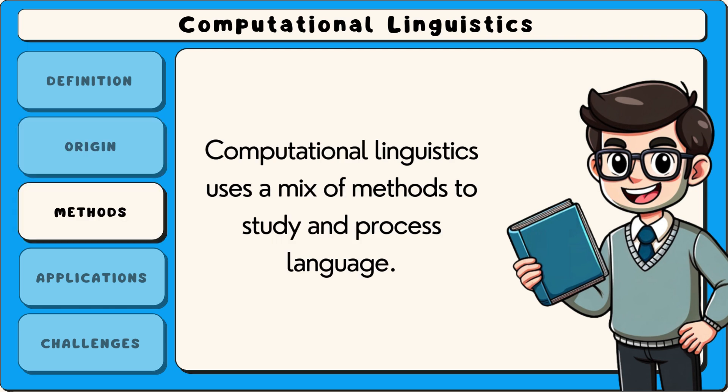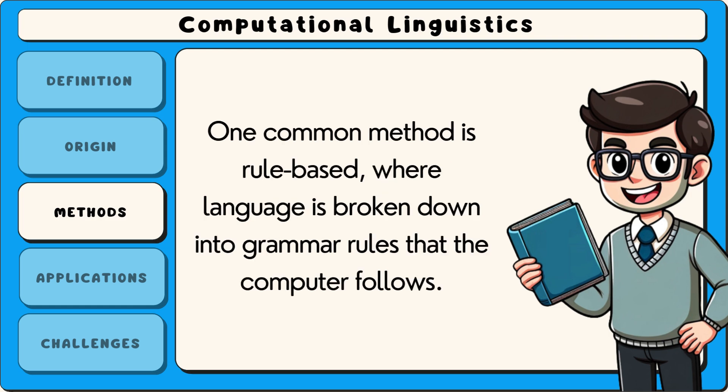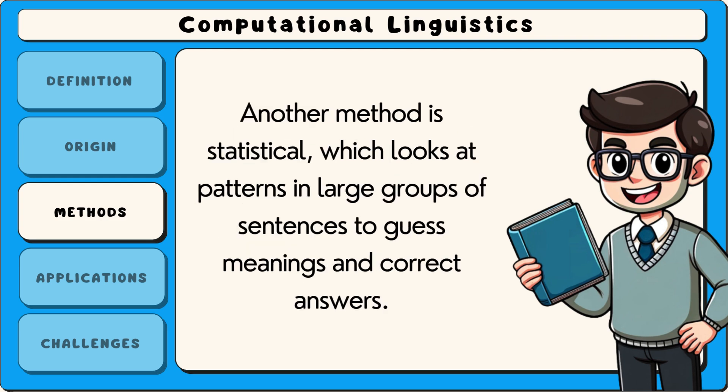Computational linguistics uses a mix of methods to study and process language. One common method is rule-based, where language is broken down into grammar rules that the computer follows. Another method is statistical, which looks at patterns in large groups of sentences to guess meanings and correct answers.